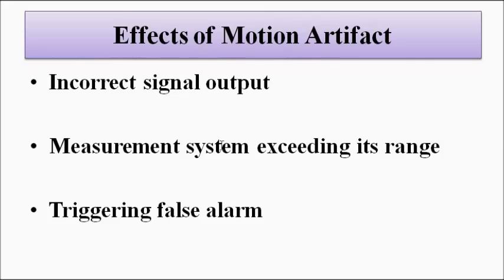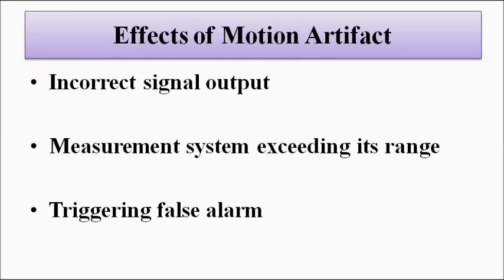The effects of these undesired artifact signals include: first, the signal output will be incorrect, as artifact signals mix with the original signal and cause a reduction or increase from the true value. Second, the measurement system may exceed its maximum range, which can trigger false alarms. Third, baseline wandering can occur. There are various problems associated with motion artifacts due to patient body movement.